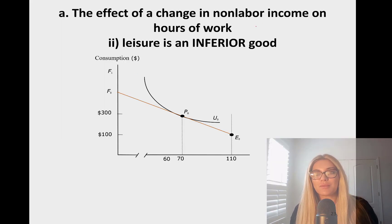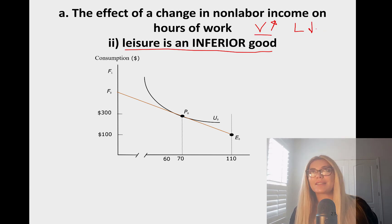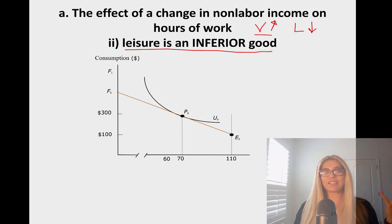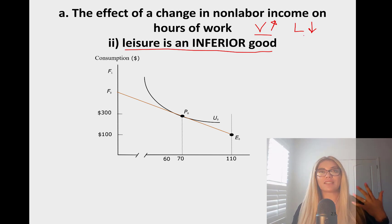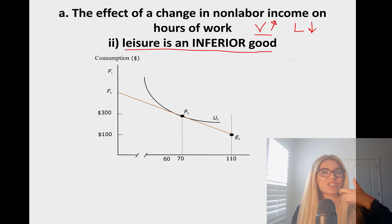So the effect of changing non-labor income — V is again increasing, leisure is an inferior good. We need to figure out what it means for leisure to be an inferior good. If income goes up, the income effect says consume less of the inferior good. For 99.9999% of people, leisure is going to be a normal good. However, imagine leisure is inferior — that means I have lots of non-labor income, lots of rental income and profits, and I choose to work more and enjoy less leisure.